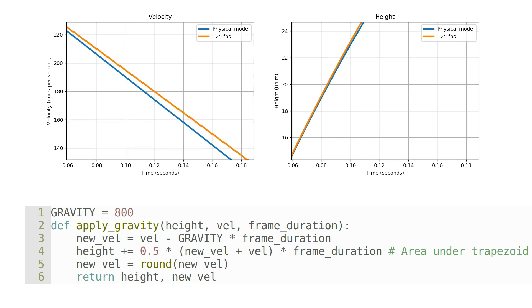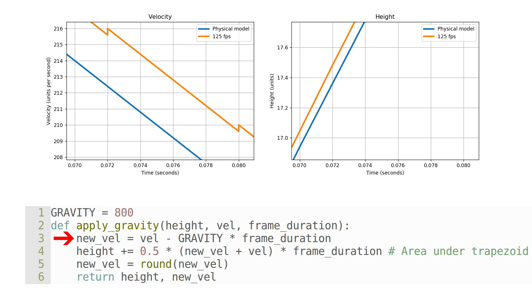So what's going on here? The key is on line 3. Note that because of the rounding from the previous frame, the input velocity will always be an integer. As such, if the frame-duration multiplied by 800 has a fractional part that is less than 0.5,